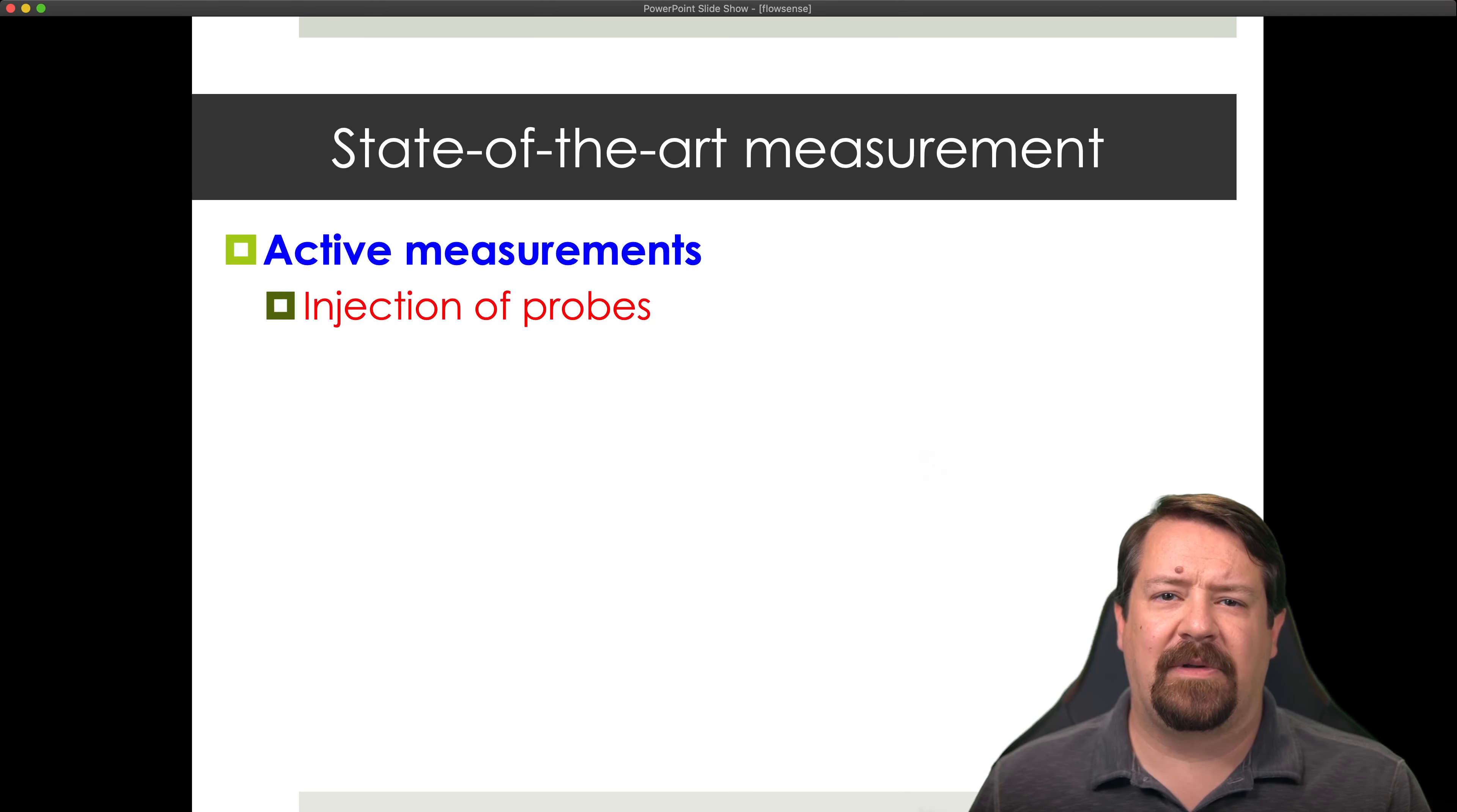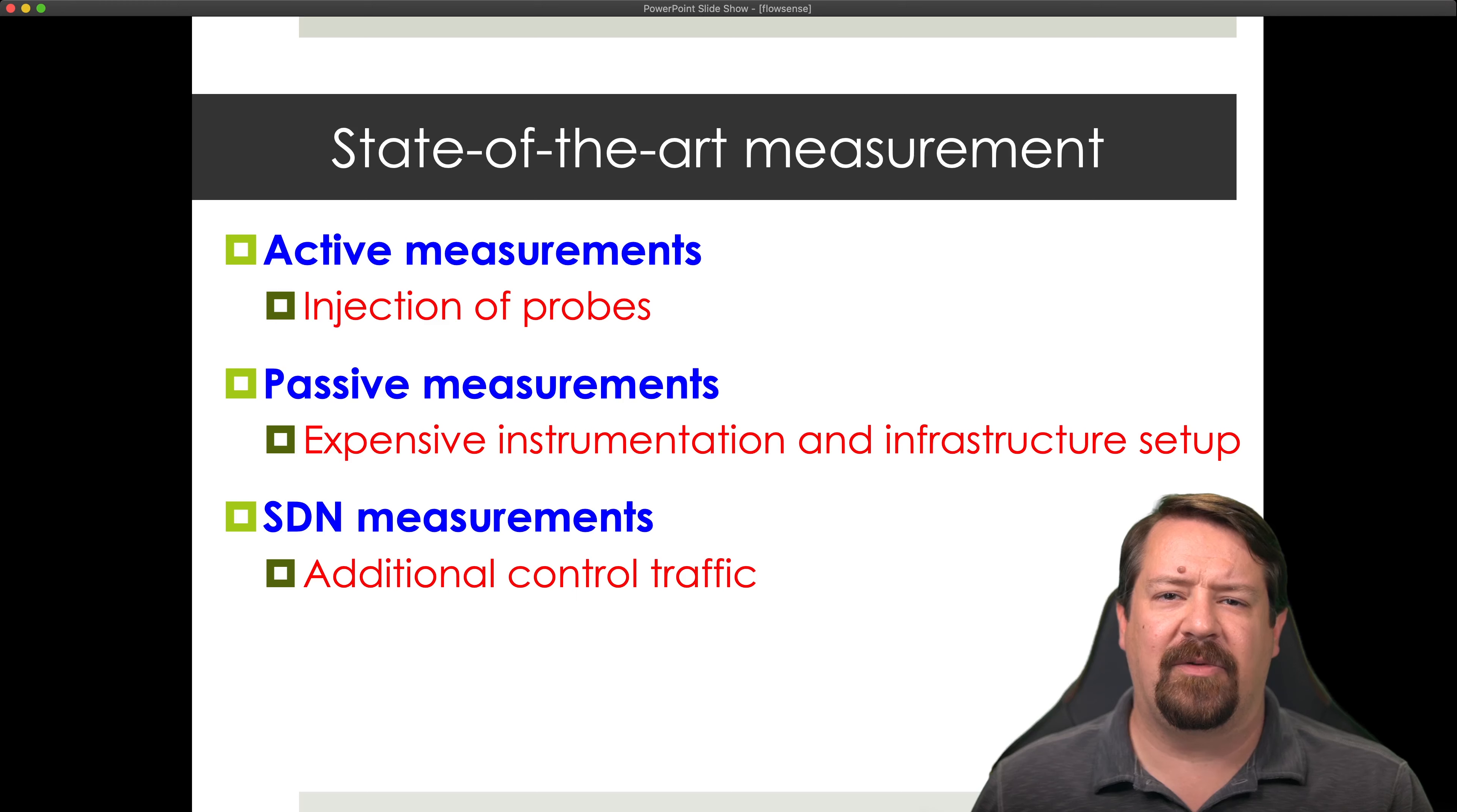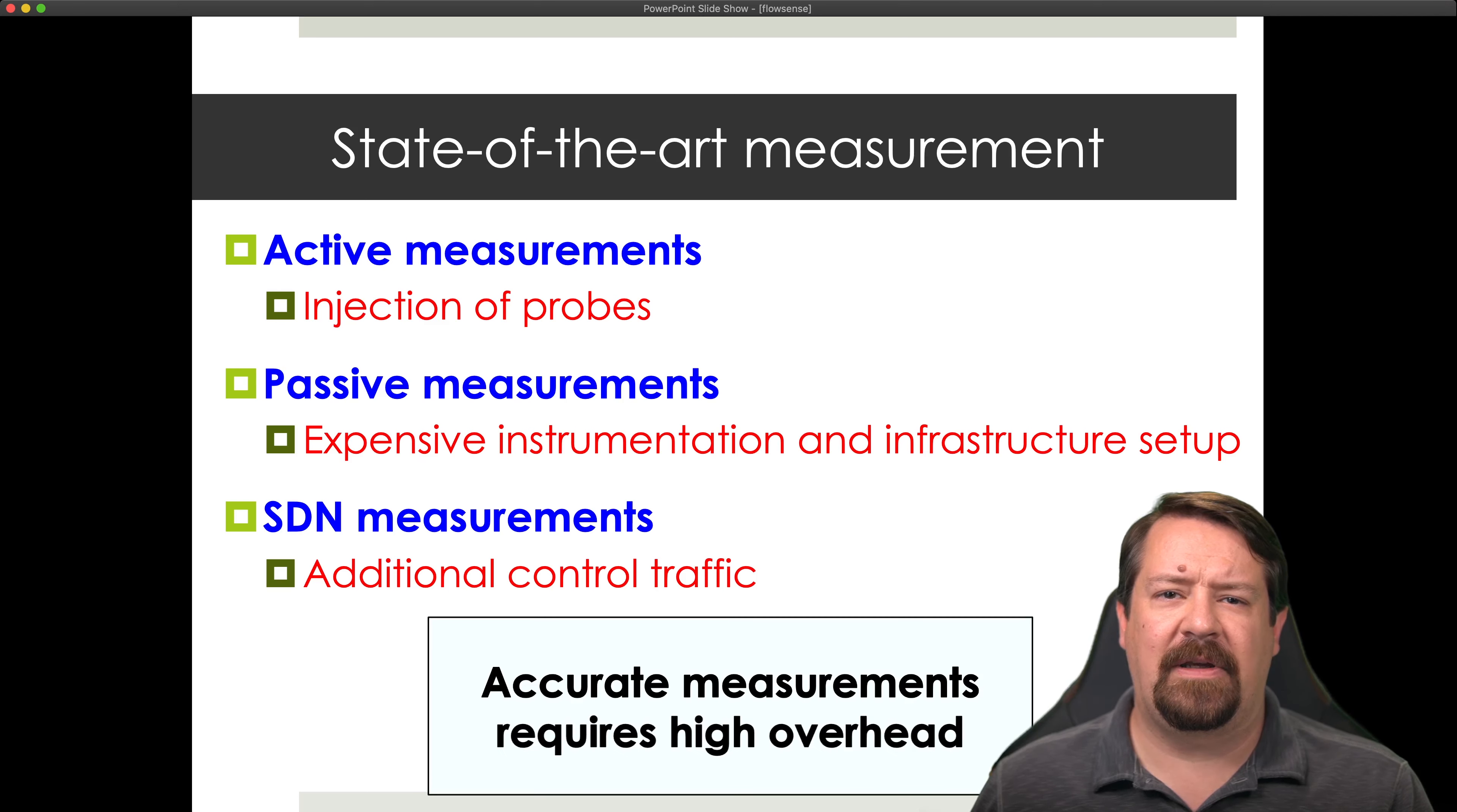Many measurements rely on active measurements, injecting more traffic into the network in order to perform the measurement. Other types of measurements we've seen, like NetFlow, are passive measurements, where they just observe the traffic passing through, but that limits the sorts of measurements that can be collected. With software-defined network measurements, we have to be concerned about the additional control traffic that will be generated between the SDN switches and the controller. So with each of these examples, performing accurate measurements incurs some sort of high overhead.